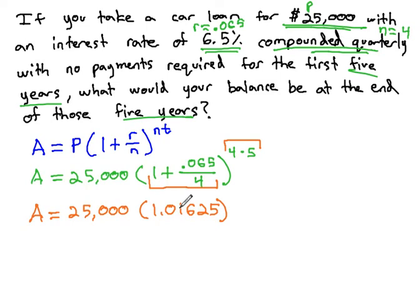If you round too much, you can end up being off quite significantly. So put all the digits your calculator gives you. In the exponent, 4 times 5 is 20. Now we should be able to calculate the final amount.